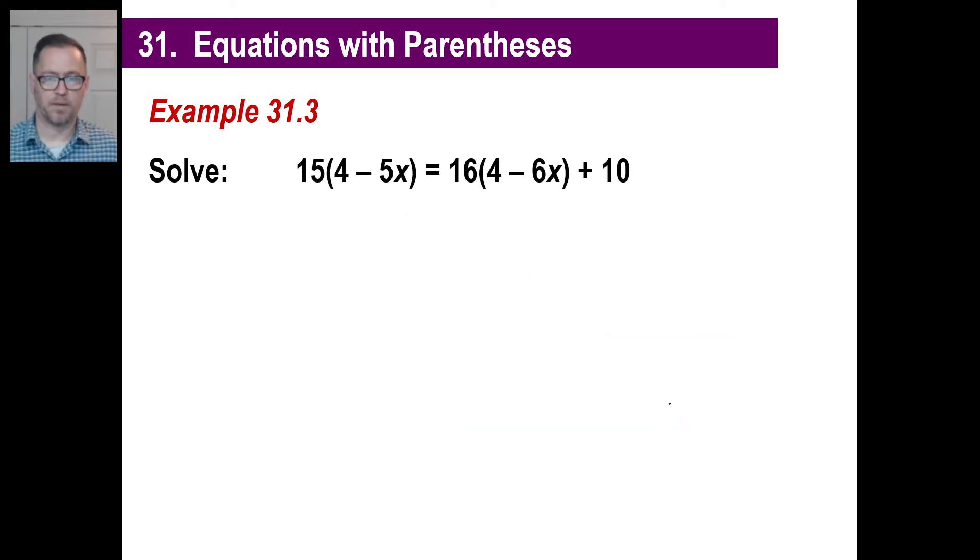Copy this one down. Let's distribute. What is fifteen times four? Trick about four, by the way. If you want to multiply something by four, double it. Then double it again. So fifteen twice is thirty. Then thirty twice is sixty. Fifteen times negative five. That'll be negative seventy-five. And then, of course, the x. Sixteen times four. Again, let's double it. Sixteen double is thirty-two. Thirty-two doubled is sixty-four. And here's a trick for six. Ready for the trick for six? You take the sixteen and the six and you go like this. Sixteen times six is ninety-six. There's your trick. Ninety-six x. And then plus ten.